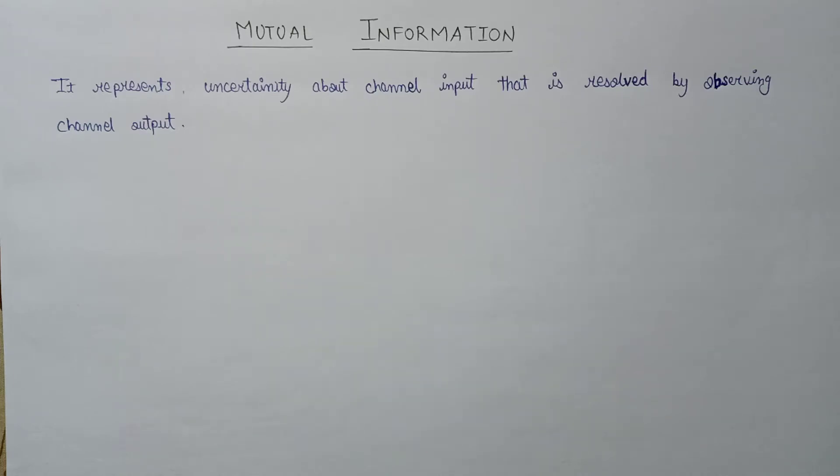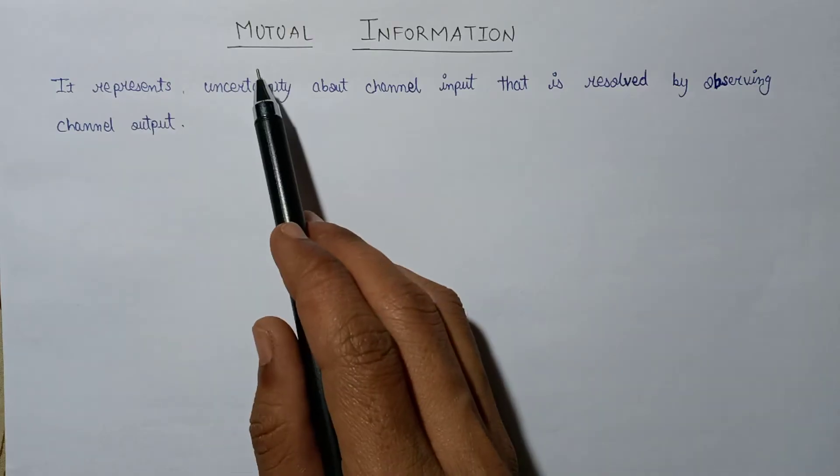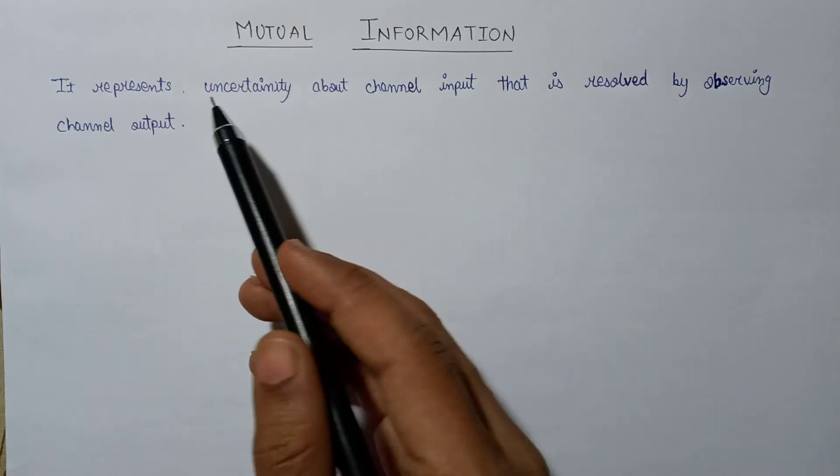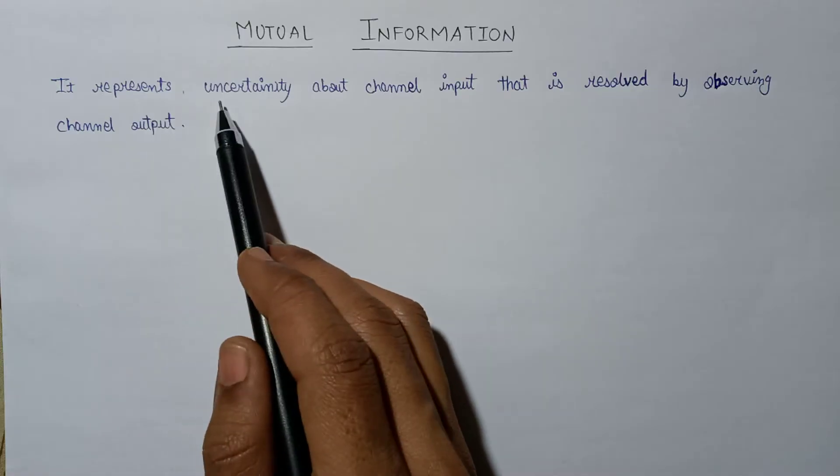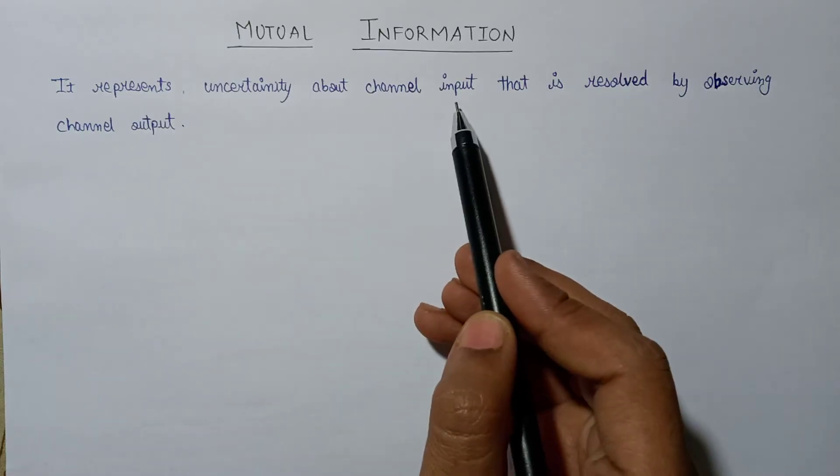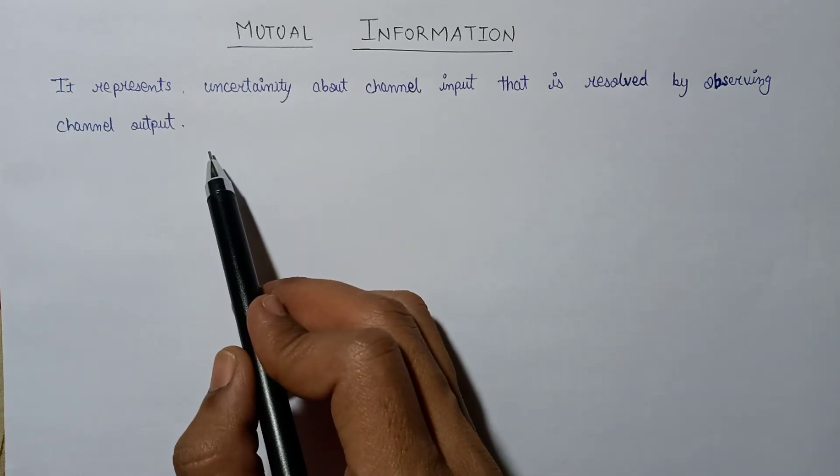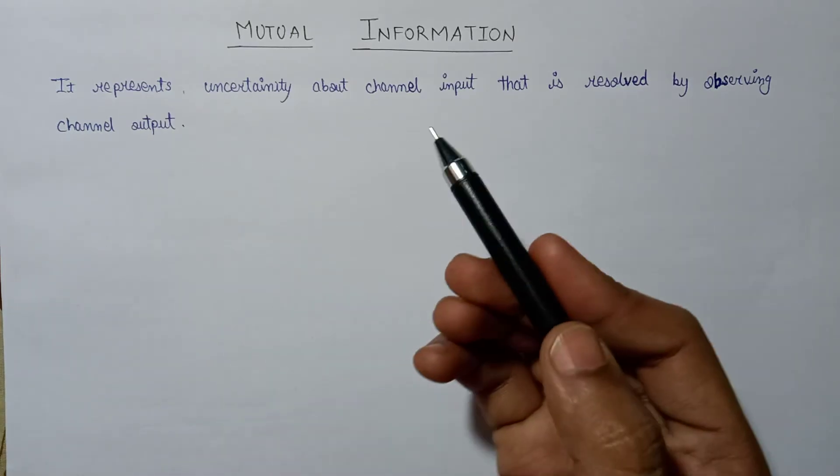Hi everyone, in this lecture we are going to start a topic named as mutual information. The mutual information represents uncertainty about channel input that is resolved by observing channel output.